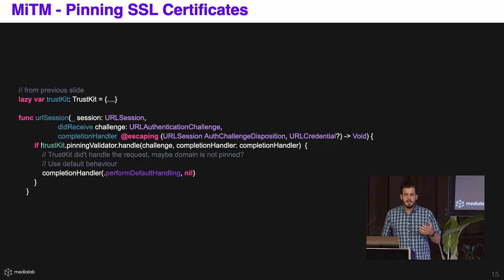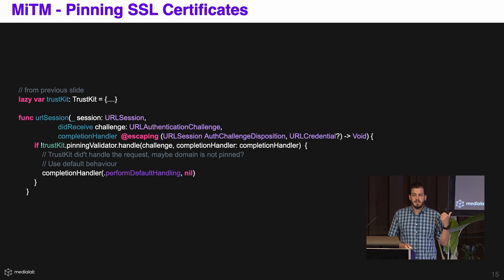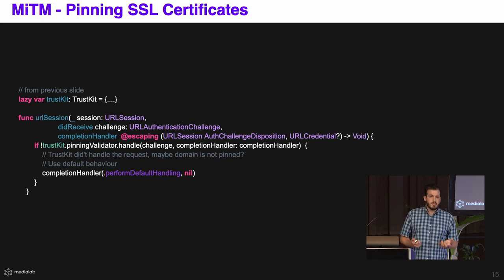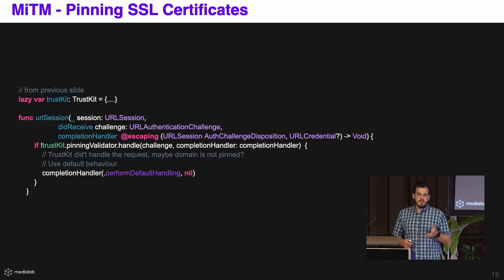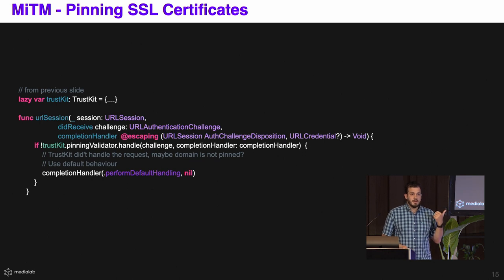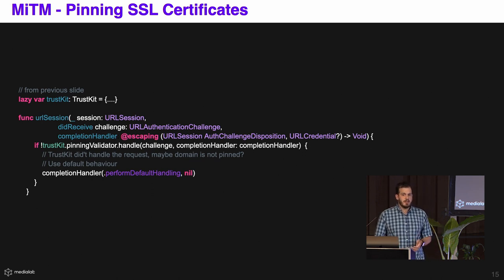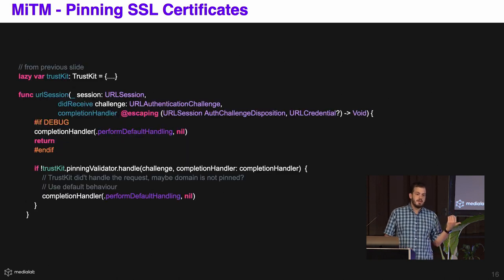Using the URLSession delegate, we have an authentication challenge method for this. We just have to forward this challenge to our TrustKit instance with our configuration, and we are going to be validating all the requests from our application — but it will only validate requests for Apple, not any other domain, so you might want to add all the domains you need. But if you are doing it like this, while we are developing and debugging our application, it means we won't be able to use Proxyman or Charles. So we might want to add a little macro to avoid this: if debug, ignore this.